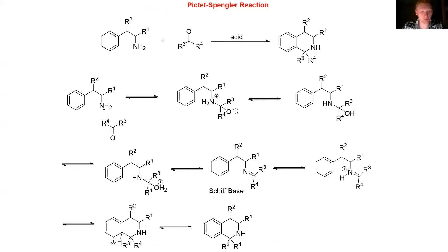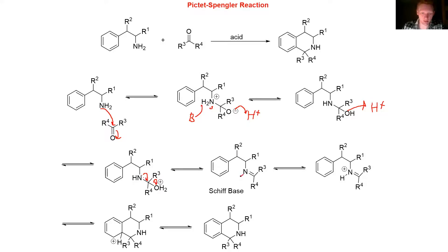Here is the Pictet-Spengler reaction mechanism. We're going to have the nitrogen attack the carbonyl center, and these electrons swing up. Then we do a simple protonation-deprotonation. Then the alcohol attacks another H+, and now we have water, which is a good leaving group. So the lone pair of nitrogen swings in and the water leaves. Now we have our Schiff base intermediate. The nitrogen will attack H+ again, and now we have our iminium intermediate.